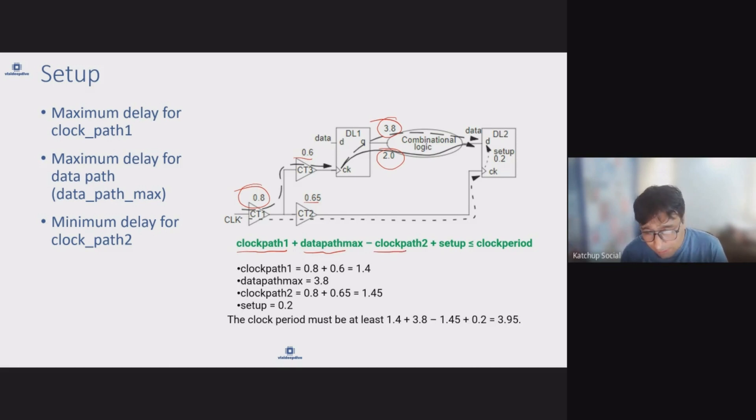On the clock path, delay is 0.8 plus 0.6, that becomes 1.4. On the data path, what delay will we pick? We'll pick the maximum delay which is 3.8 in this case, so we'll pick 3.8. On clock path 2, we'll pick delay 0.8 plus 0.65. Let's say setup for the flop is 0.2, and this allows us to calculate the clock period.